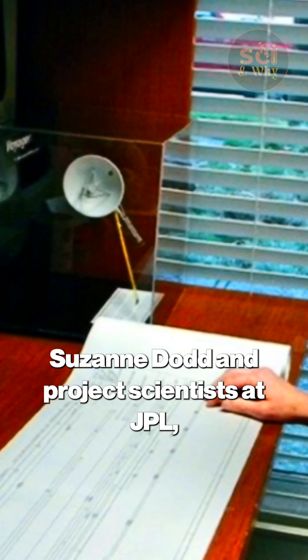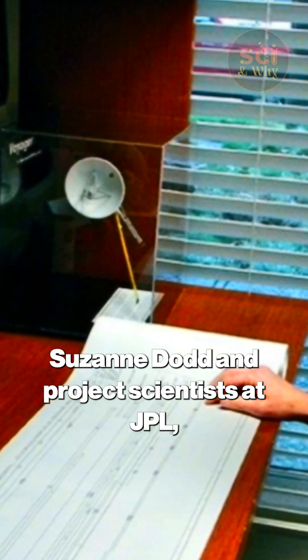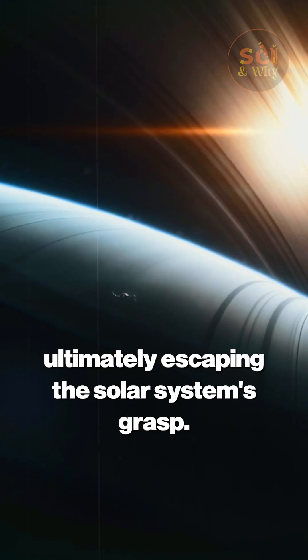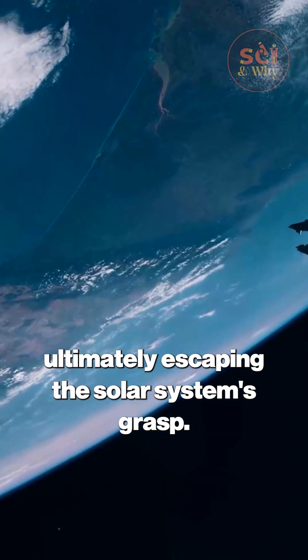Under the stewardship of flight director Suzanne Dodd and project scientists at JPL, the spacecraft gained speed from gravitational slingshots at Jupiter and Saturn, ultimately escaping the solar system's grasp.